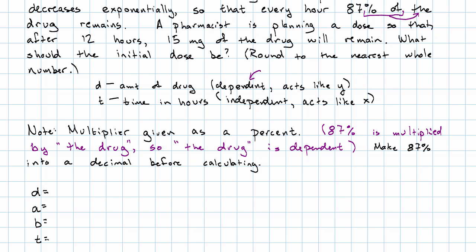In this story, we're certainly told the multiplier. That's 87%, which is 0.87. And we're definitely told the amount of time. That's 12 hours.